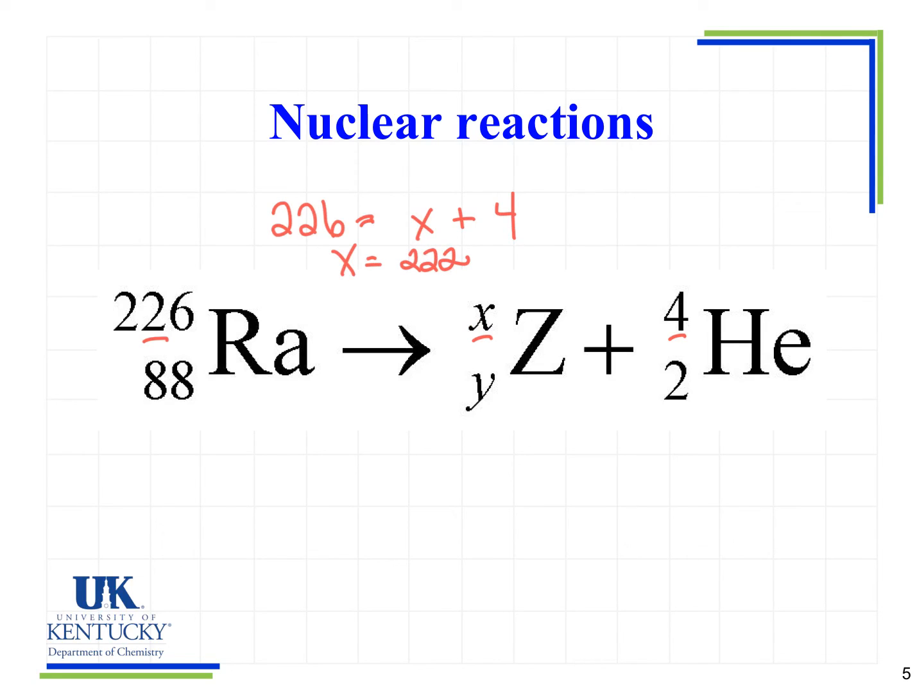Now we can do a similar determination for the atomic number Y. So we look and we say we have 88 on the left equals Y plus 2 on the right. Therefore Y equals 86.